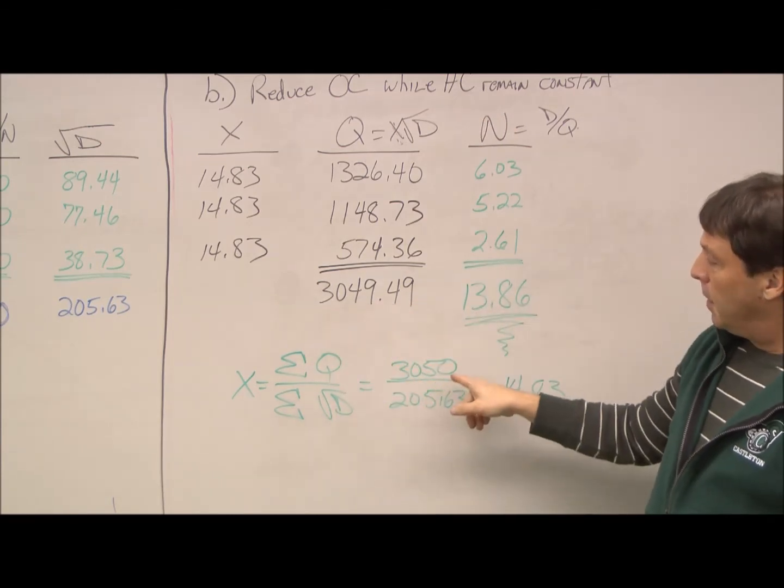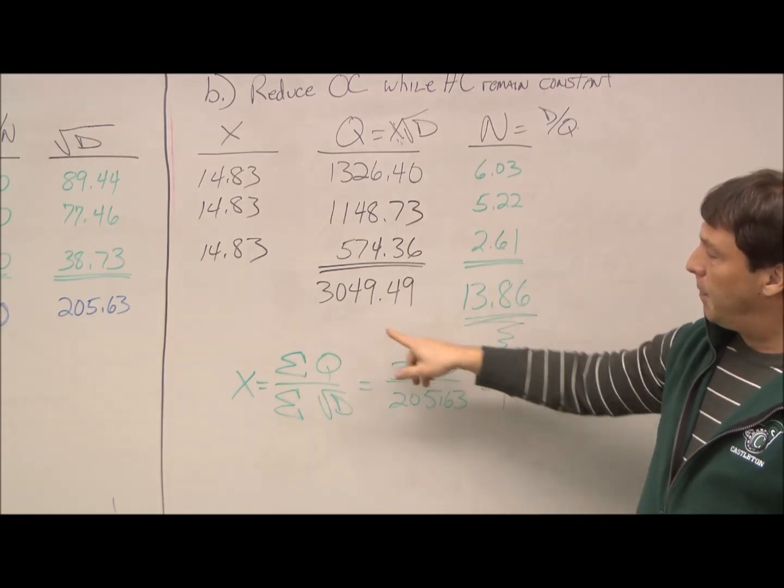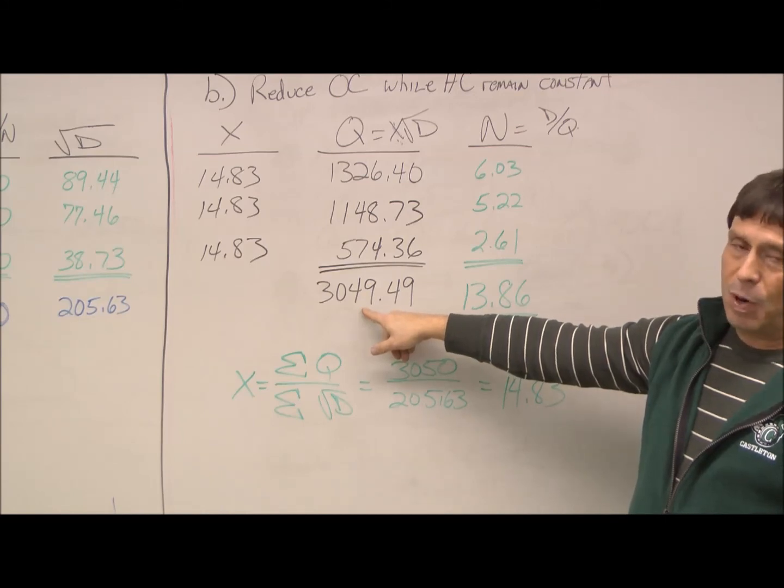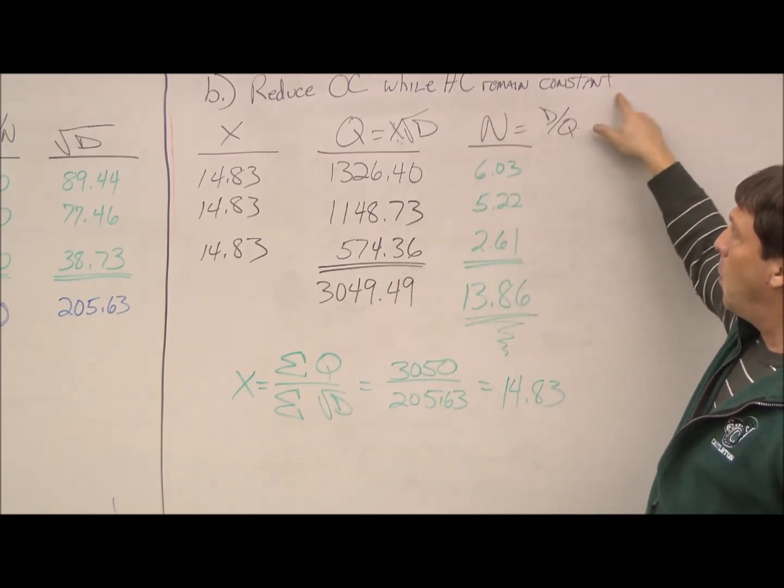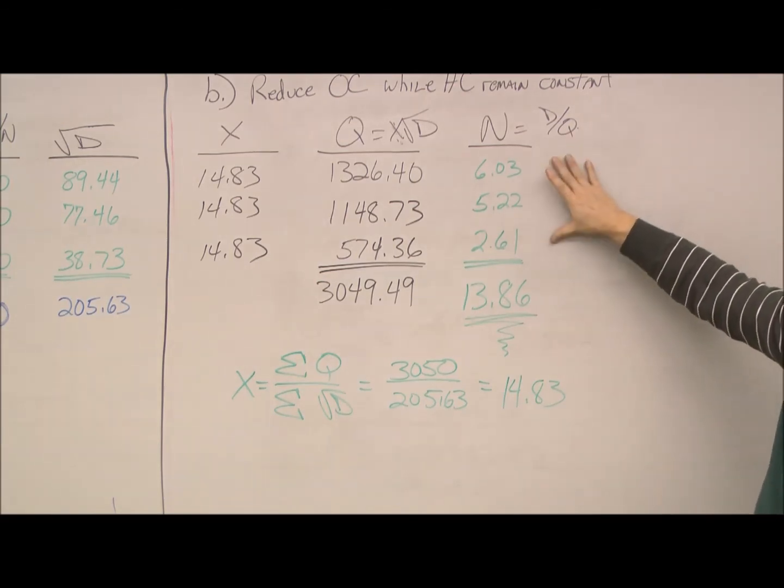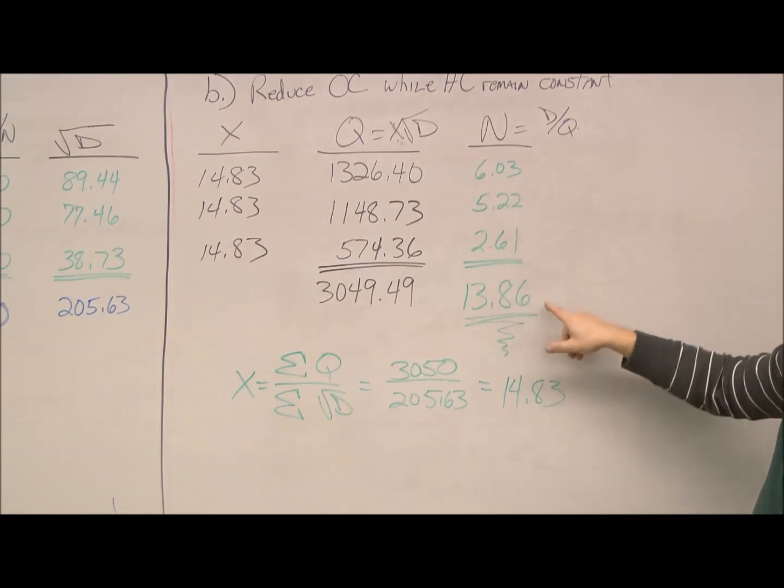So, that keeps our holding costs constant. So, within a roundoff our original 3050, and this is rounded off to 3050 are the same. So, we kept our holding costs the same. What we've done is, if you look at the number of orders, it's gone down to 13.86. Originally, it was 17.